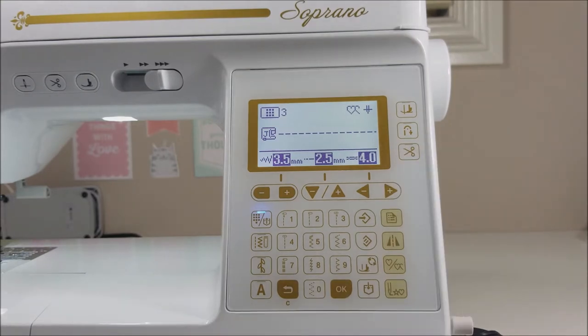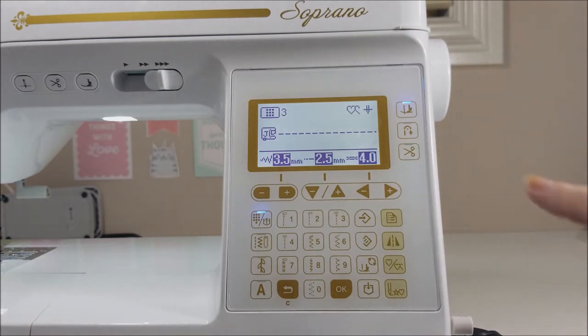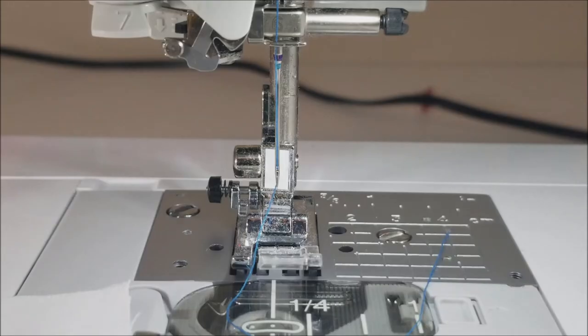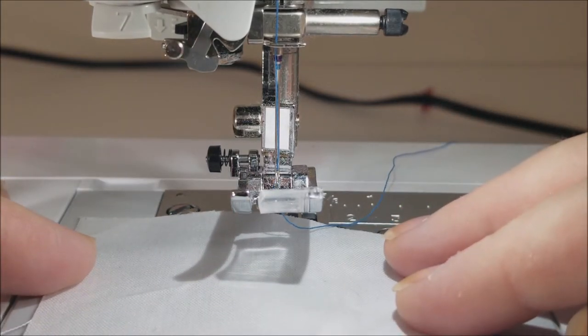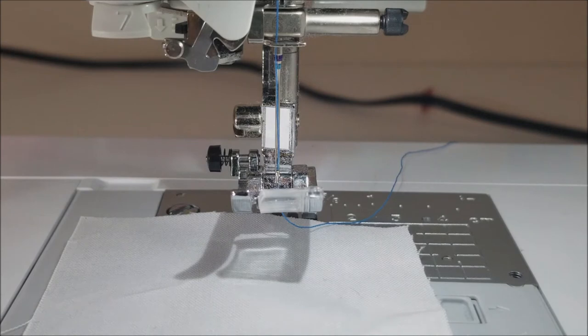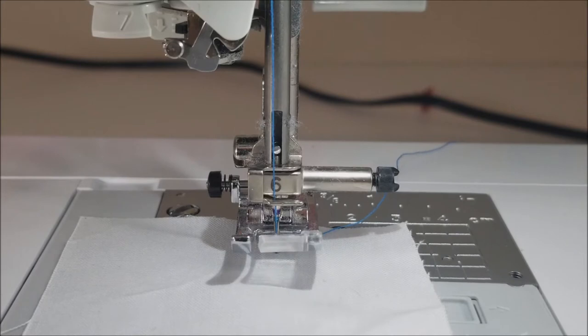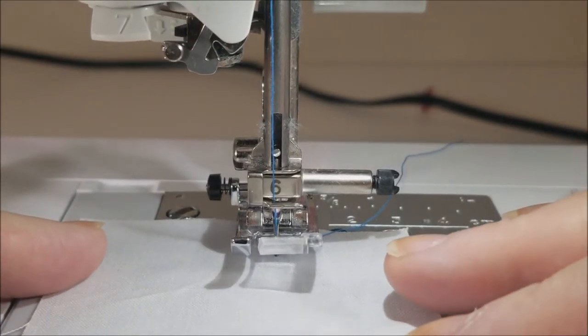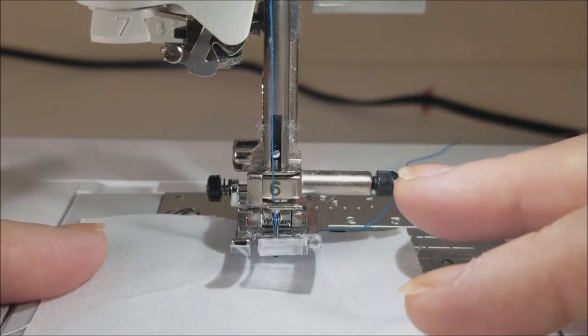So first of all, let's press this button to turn it on and you'll notice a blue light come on which means it's activated. We're going to raise our presser foot, put our piece of fabric underneath, drop the presser foot for the first time and put our needle down. We're going to take some stitches forward and what's going to happen is every time you release your foot pedal, the presser foot is automatically going to come up for you.